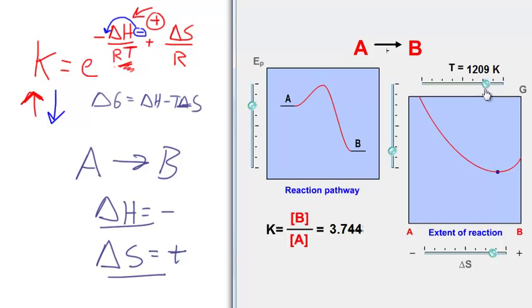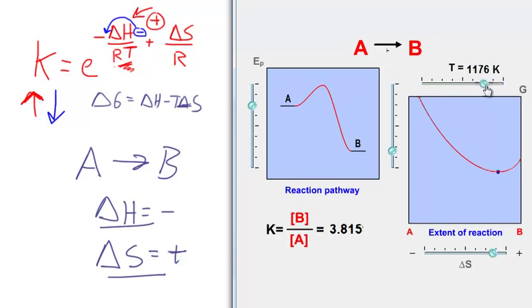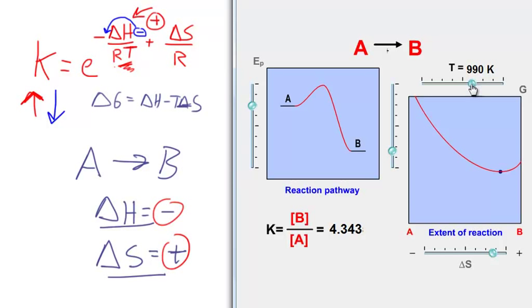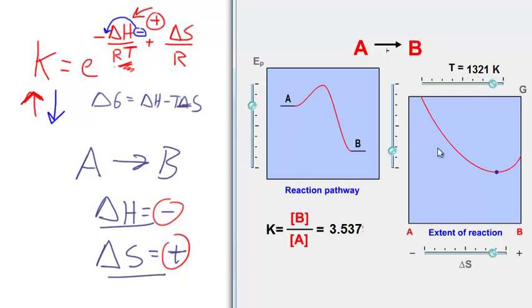In general, we say that these processes are always product favored. We don't really concern ourselves with the temperature dependence of processes that are both energetically and entropically favored. As I increase T, I will have a slight shift in equilibrium constant down, but I'll never get it to be reactant favored because it's both energetically and entropically favored.